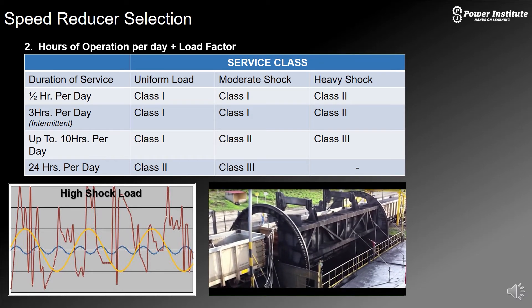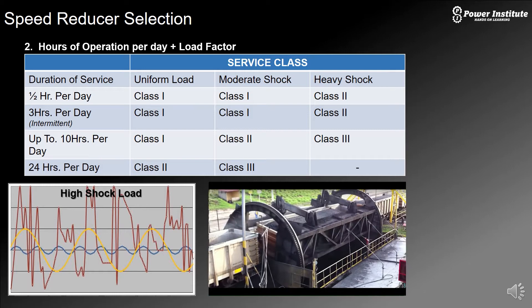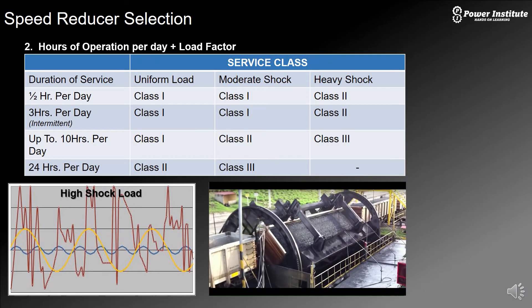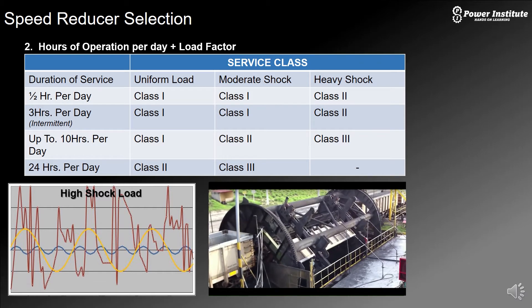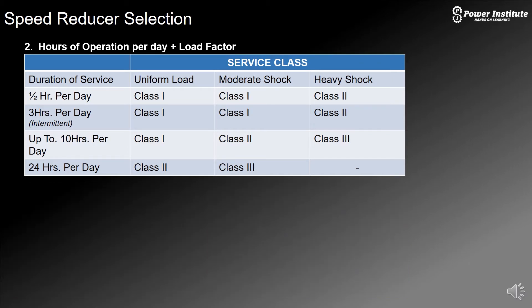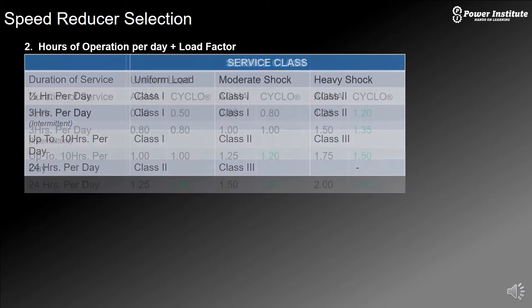There's just three examples of different shock loads, but each one of those shock loads has a different class and each class of service relates to our selection criteria. You also have to relate it to hours per day. If it's a moderate shock but only a half hour per day, it's still class one, same as uniform. But if it's a heavy shock for a half hour day, we want to kick it up to class two. The amount of shock and how long it's running per day is critical in making sure you have the right selected gearbox.